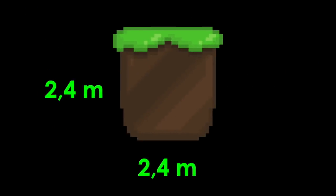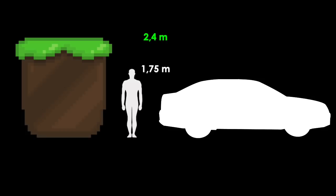By using this information, we can calculate the area of a dirt block, which is 5.76 square meters. We got that by squaring the length of the dirt block. Here's a size comparison of a dirt block to a human and a car.